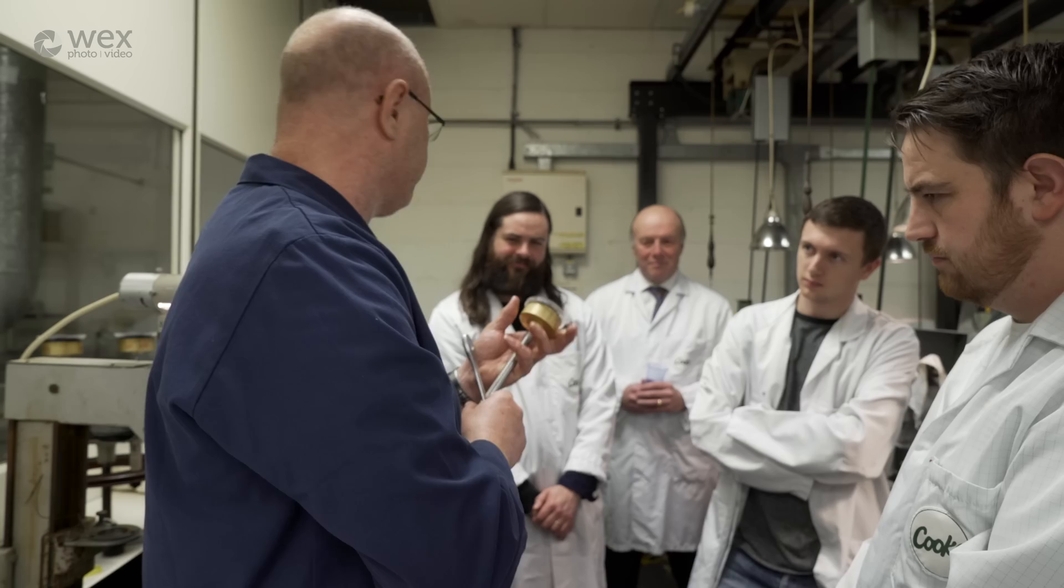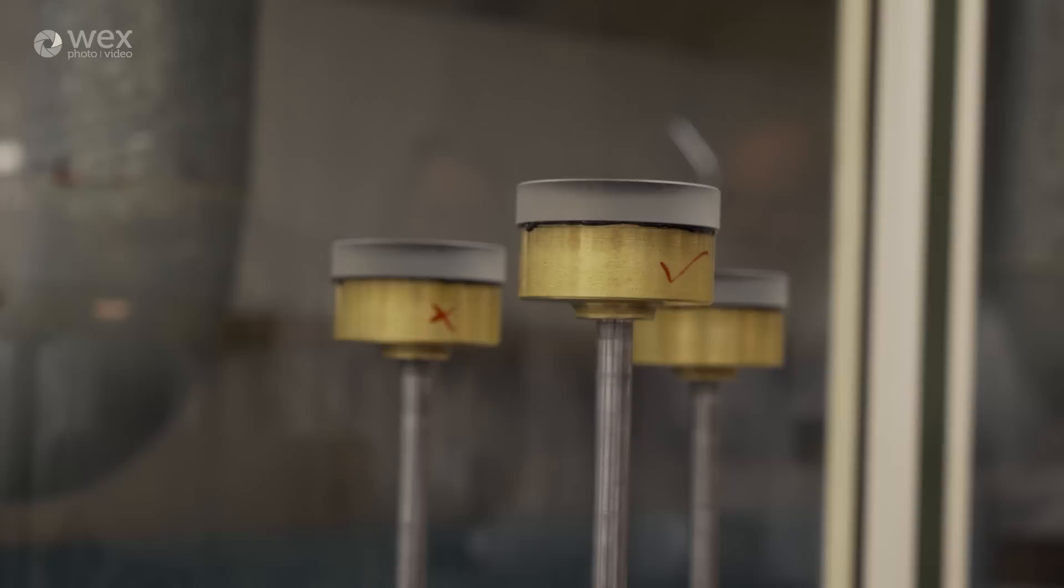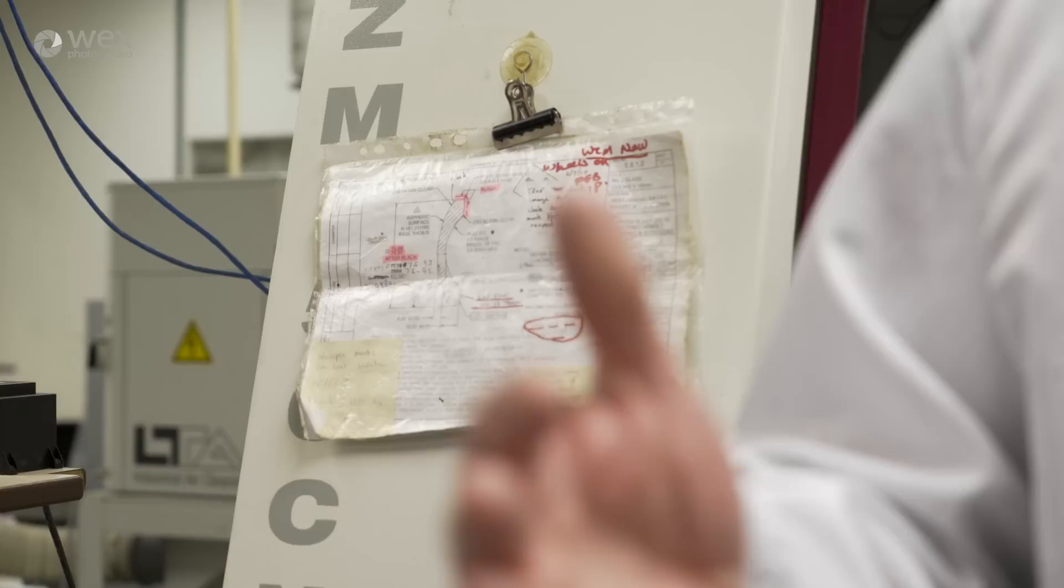But it's very straightforward to remove. With a couple of taps, it comes straight off through the vibration. Now that they're on the chucks, they can be put in the machines, and can be edged to the exact sizing needed for the lens that they're going to be put in.